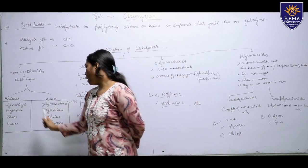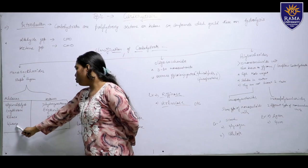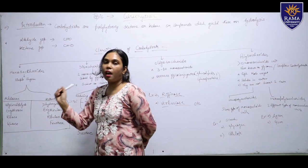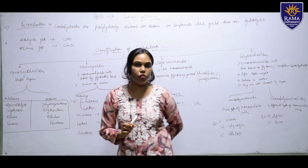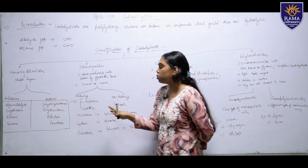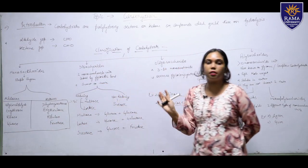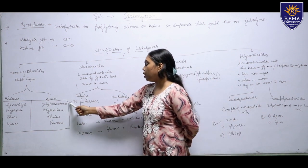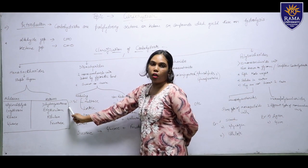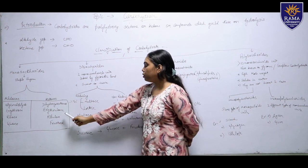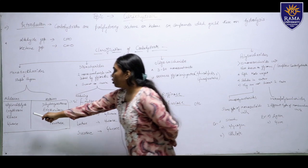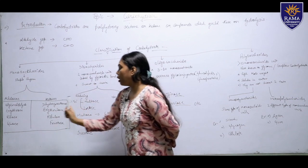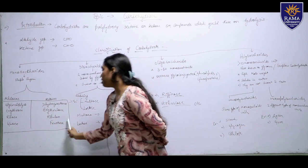Ribose and ribulose have five carbon chains. Glucose and fructose have six carbon chains. So to summarize: trioses have three carbons, tetroses have four carbons, pentoses have five carbons, and hexoses like glucose have six carbon chains.